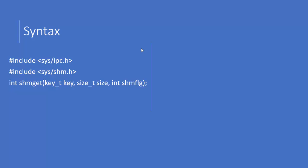On success, the shmget function returns a valid identifier, which will be used in the next function, shmat. Whatever integer shmget returns will be used by the shmat function to attach the shared segment to the address space of the process.